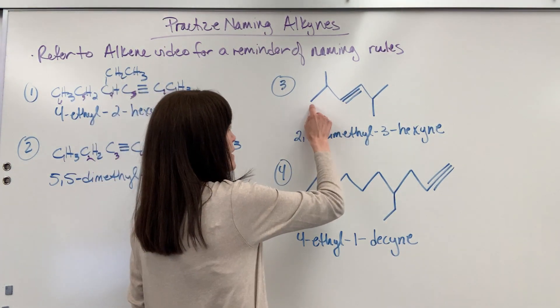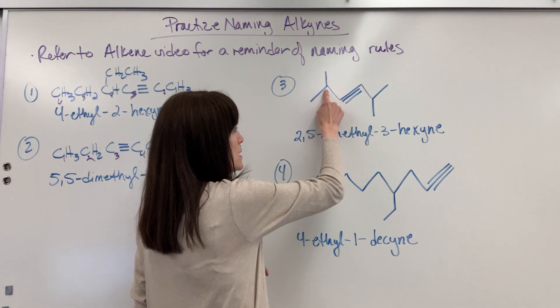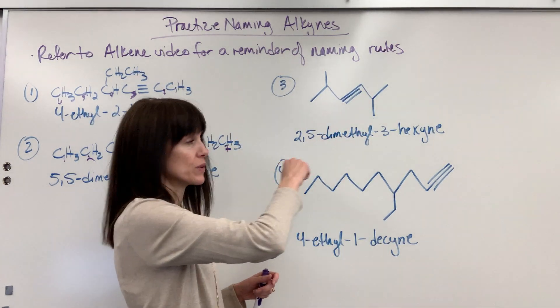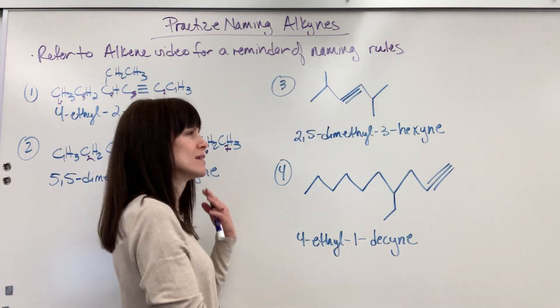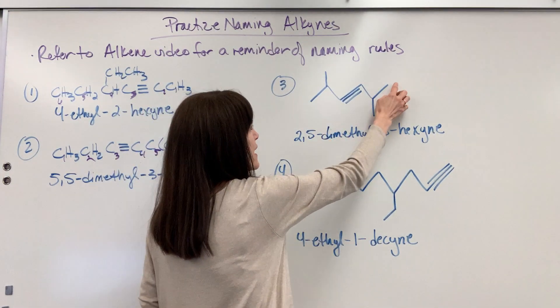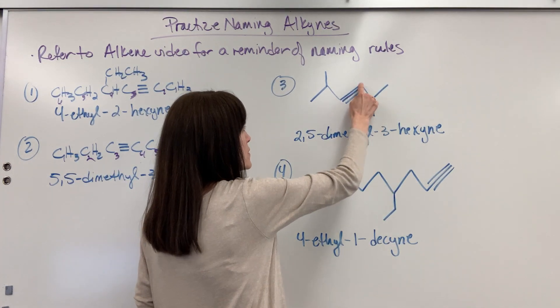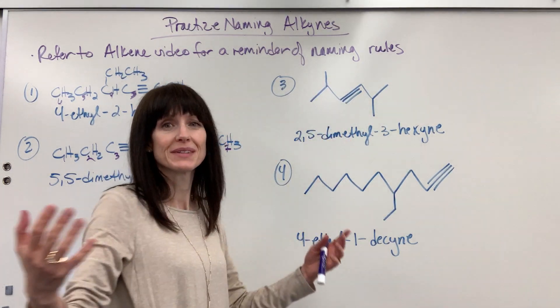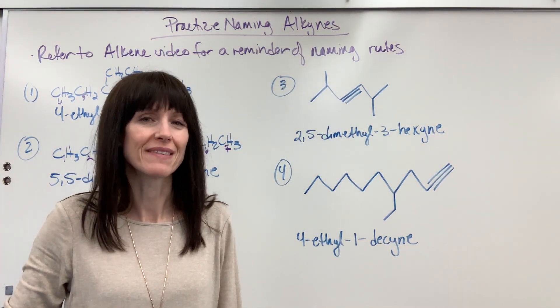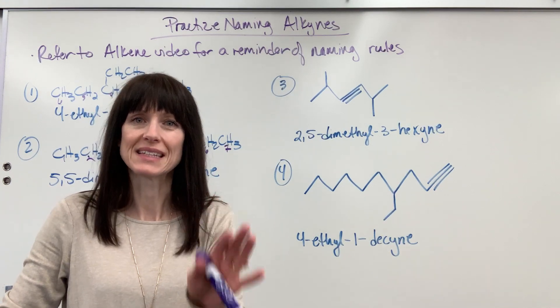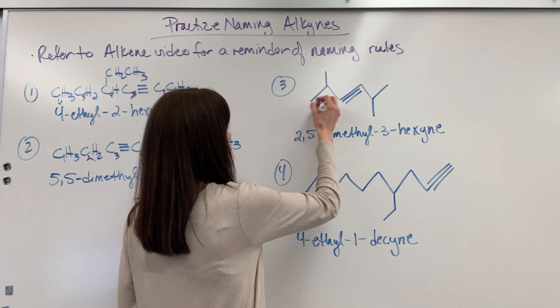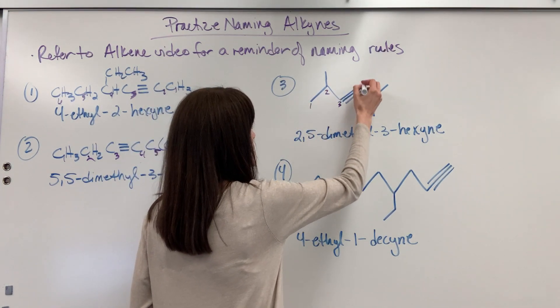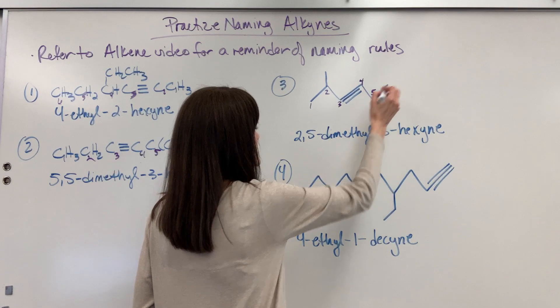So if I go left to right, we'd have a two and a five methyl group. Those are my methyl groups with the three being for my triple bond. Let's go right to left. I'd have a one, two, five. They're the same. They're the same. I could write this left to right or right to left and get the exact same name. Pretty cool. Let's go ahead and go left to right. So we have one, two, three, four, five, six.